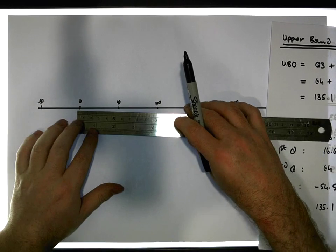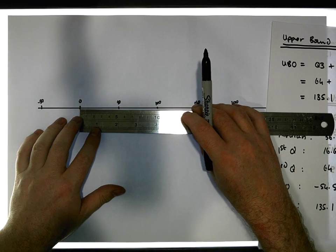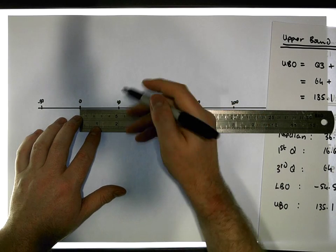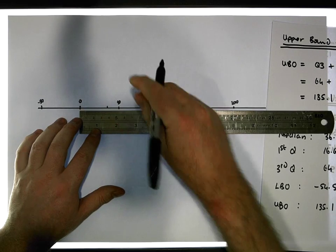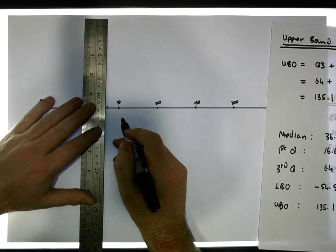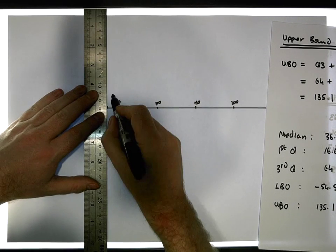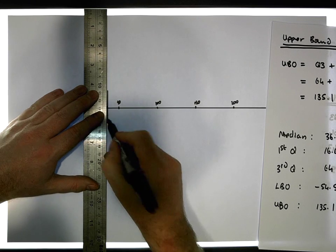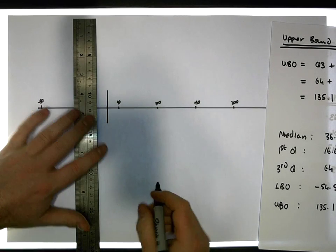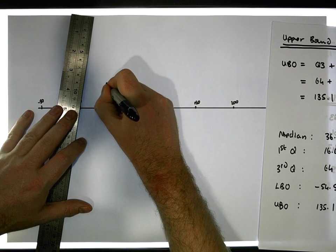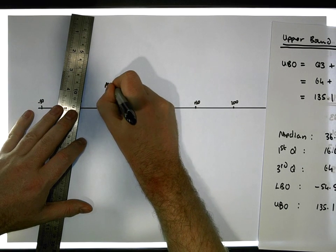The median value is at 36.7, so that's in between 3 and 4 on our scale. I'm going to put a vertical line here to mark the median.